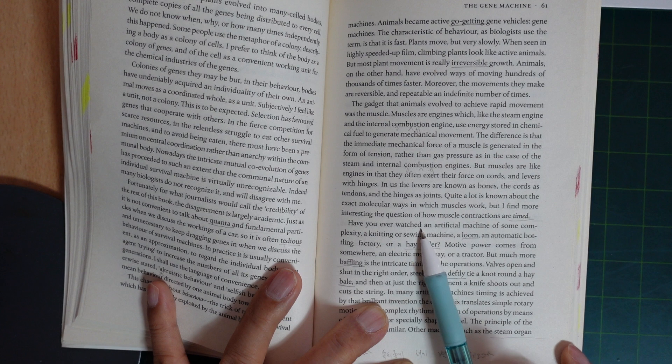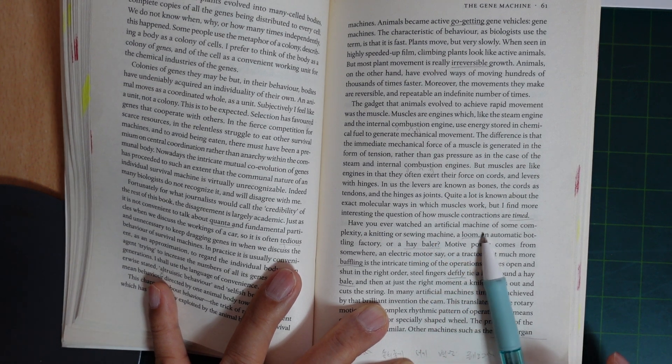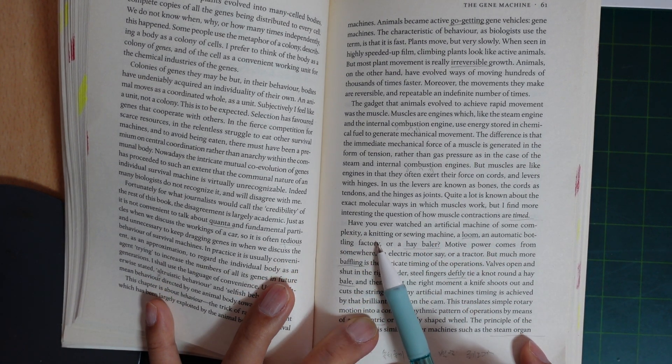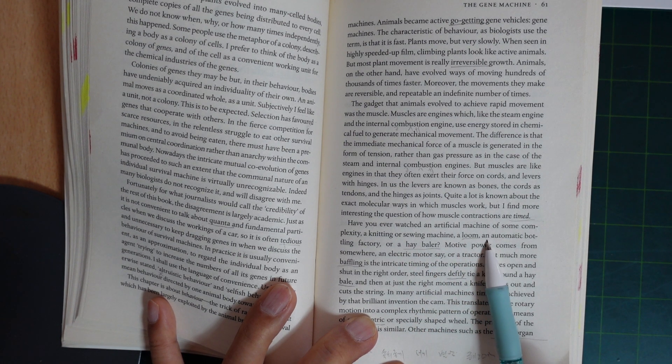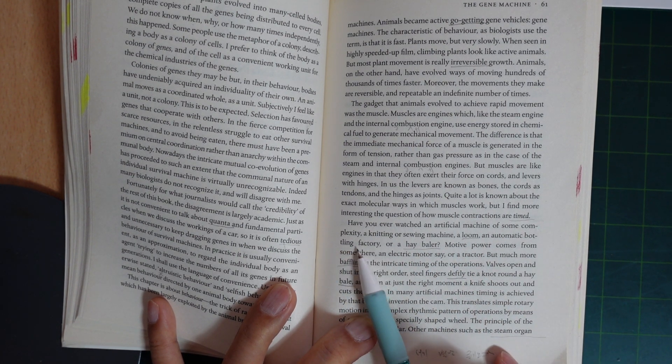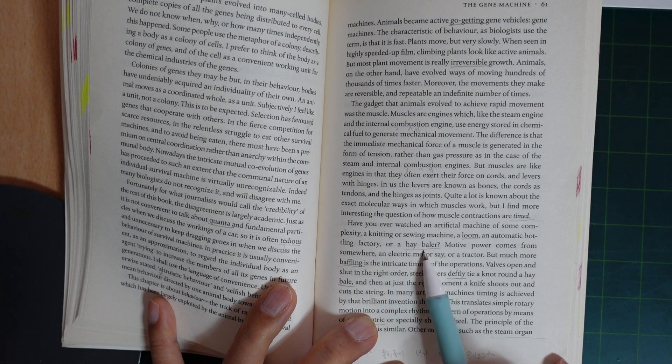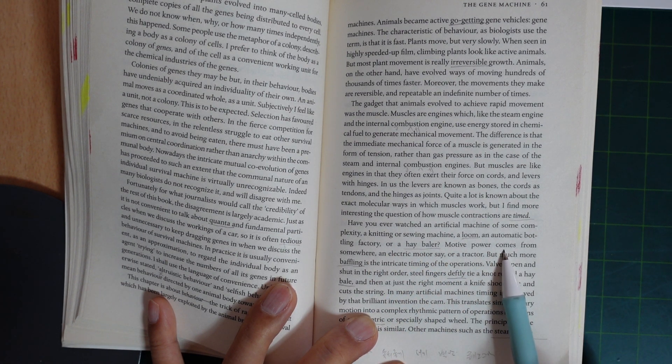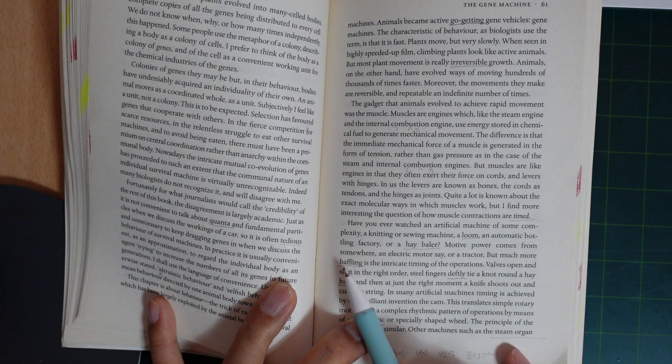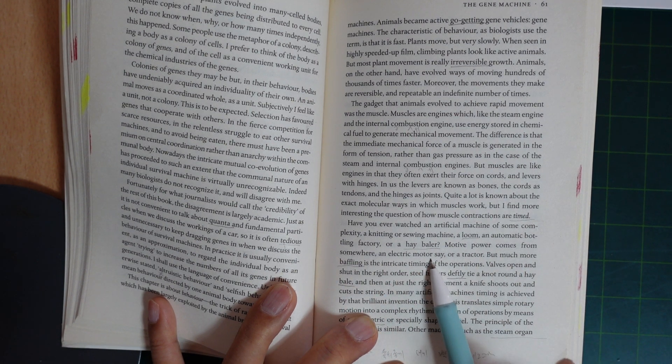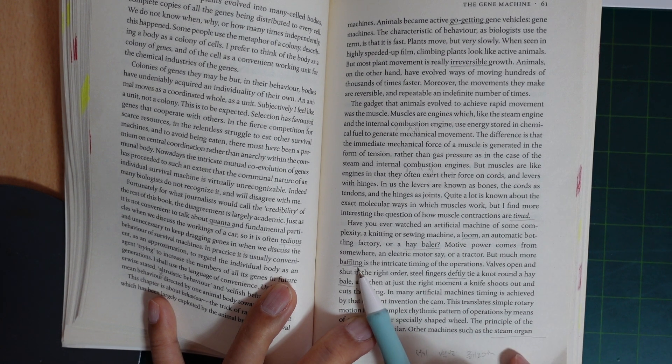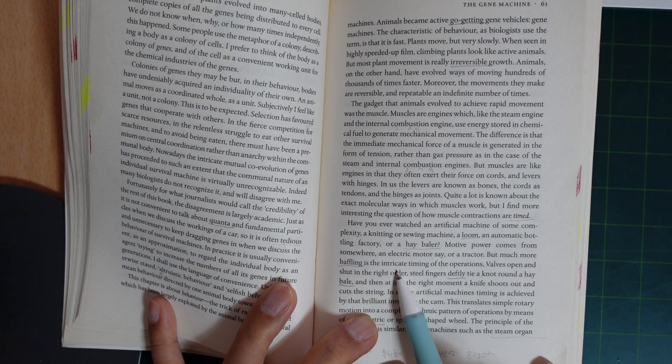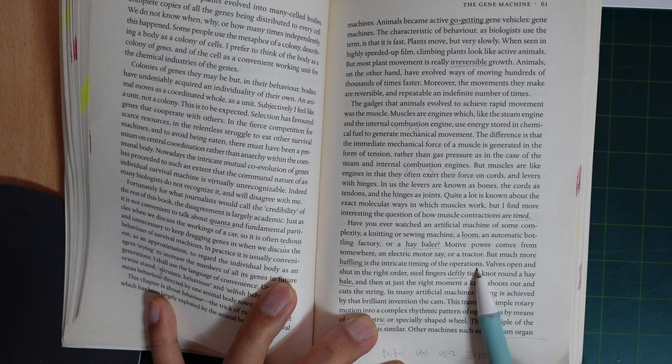Have you ever watched an artificial machine of some complexity? A knitting or sewing machine, a loom, an automatic bottling factory, a hay baler? Motive power comes from somewhere—an electric motor, say, or a tractor.